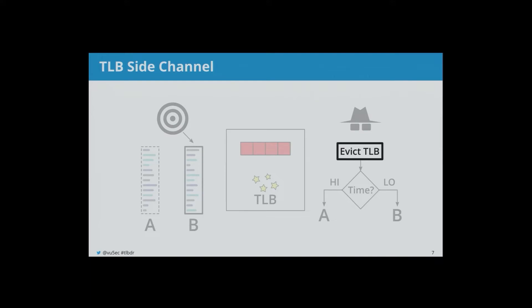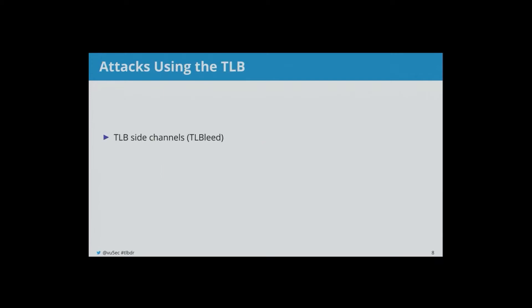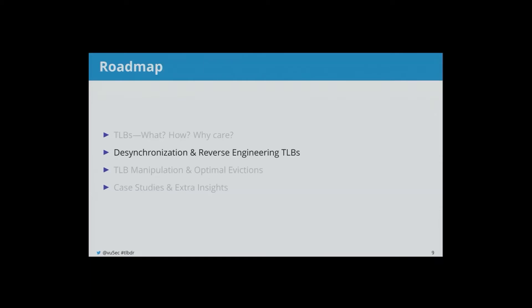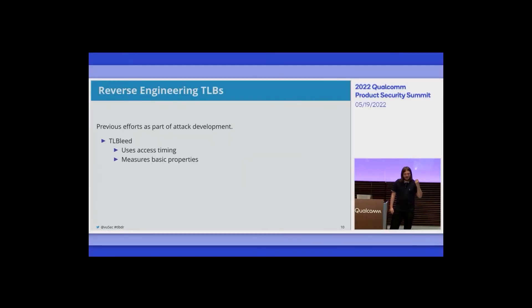We can see that evicting the TLB is a very crucial aspect of TLB side channels. There are quite a few other attacks using the TLB: TLB side channels exemplified by the TLBleed attack; MMU side channels, where the MMU walking page tables leaves traces in data caches that can be measured; and more recently, Rowhammer by way of page table walks, the PTHammer project. Understanding TLBs and especially their evictions is quite important for these novel attacks.